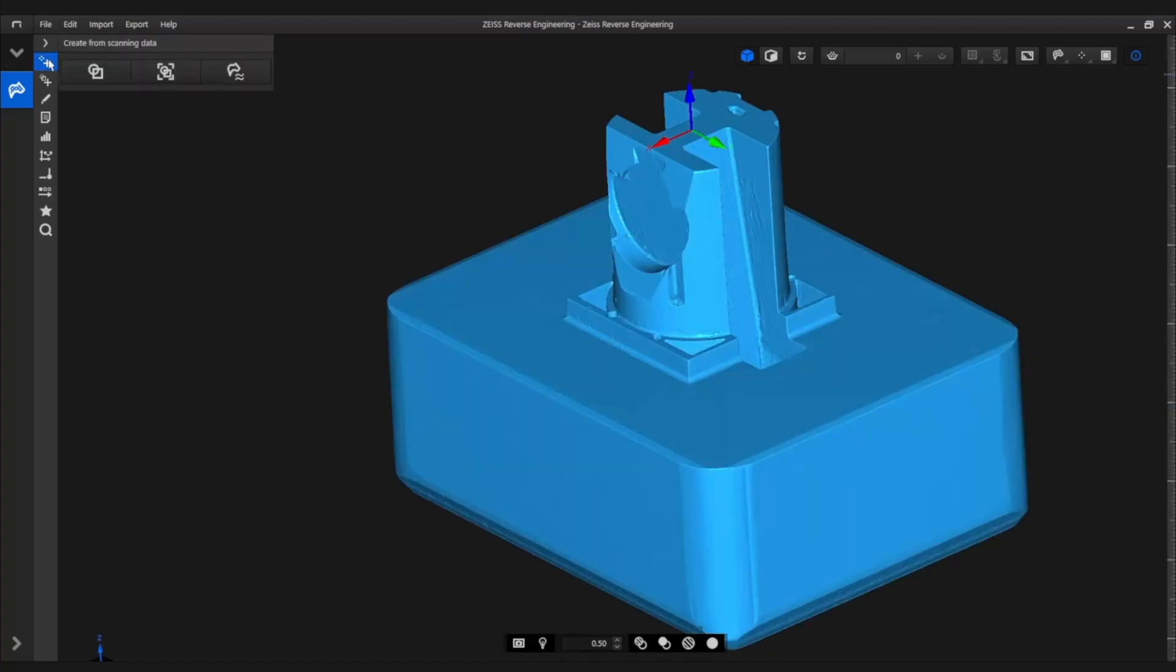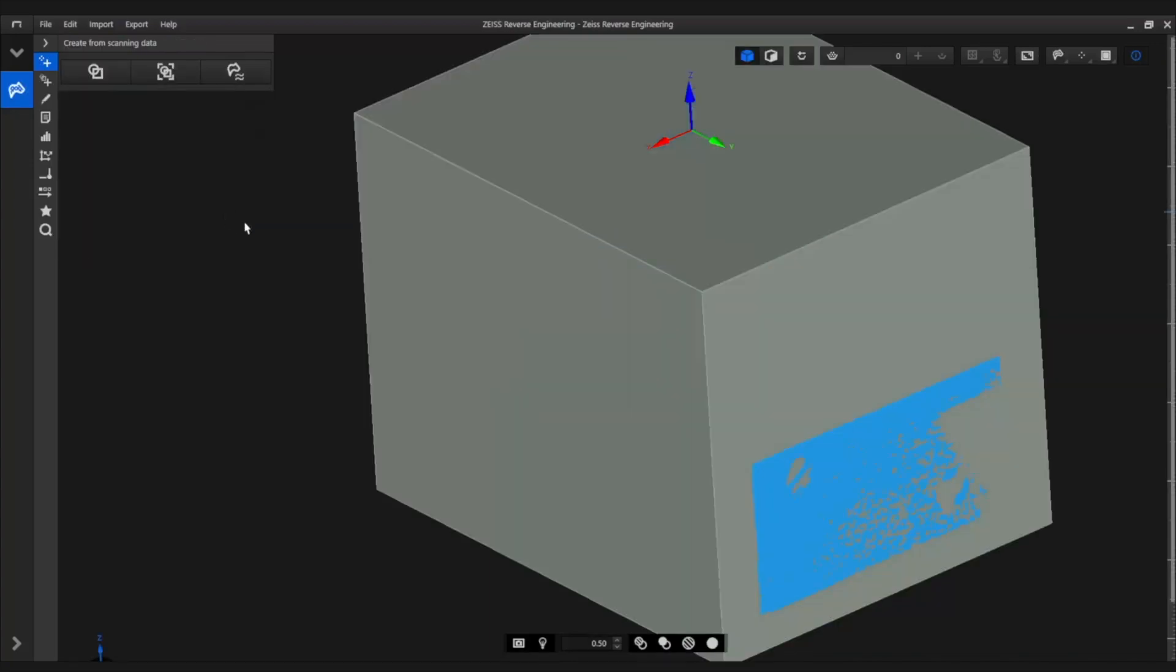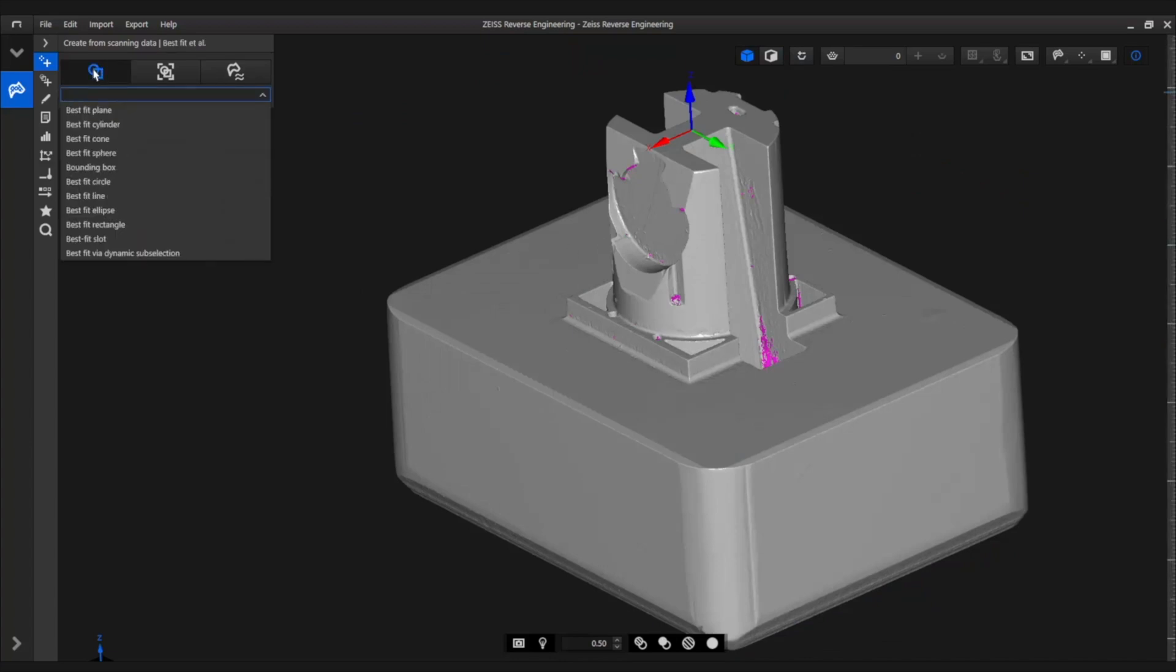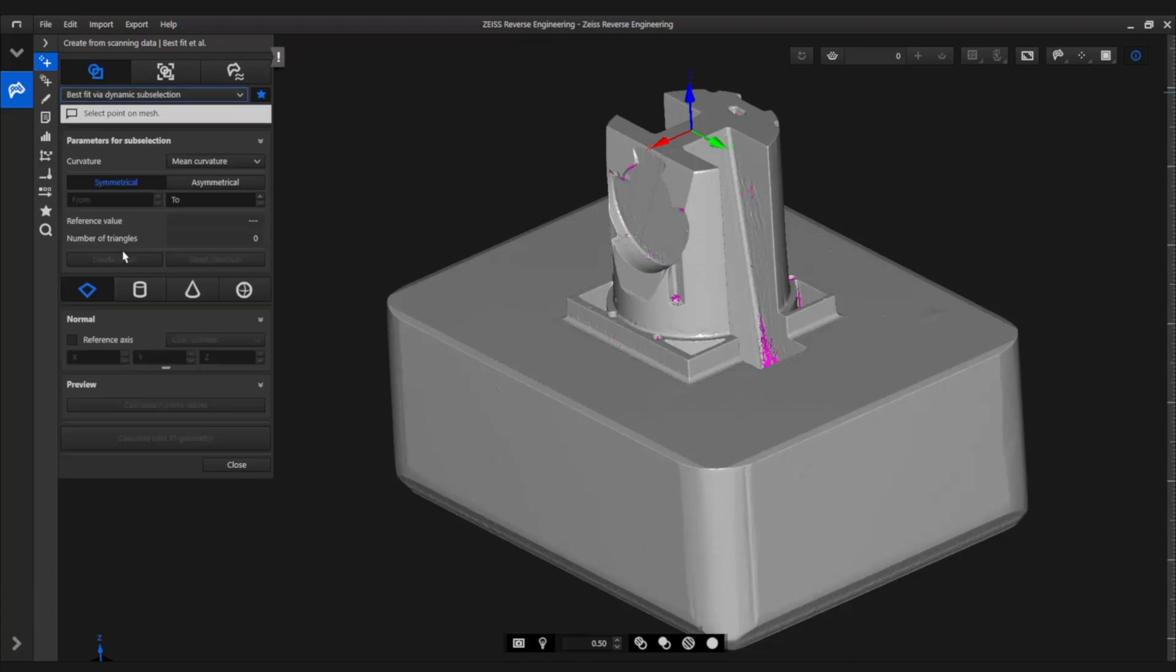We start with creating the base body. After that, we create step-by-step the different standard geometries, like this big cylinder in the middle. The software supports us by using the dynamic sub-selection. This function selects necessary areas for different elements automatically, and we don't need to select it manually.